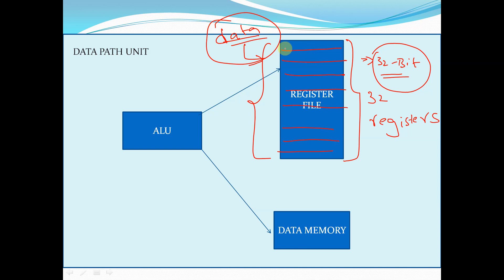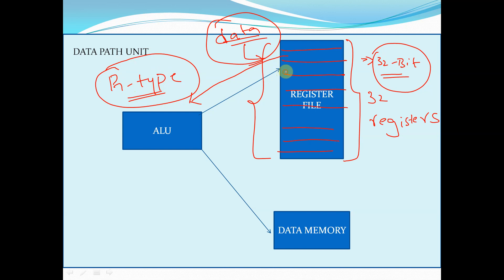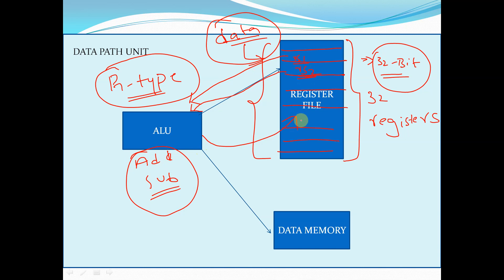The reason for pre-loading register data by default is to make the process easy — if we write data into the register file from the test bench, it will make the structure more complex. In case of R type instructions, the ALU will take the data from two registers, RS1 and RS2, perform an operation such as addition or subtraction, and store the result back in some register. This is the basic example of an ALU operation.